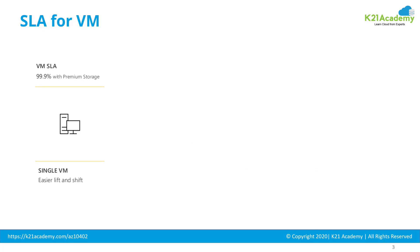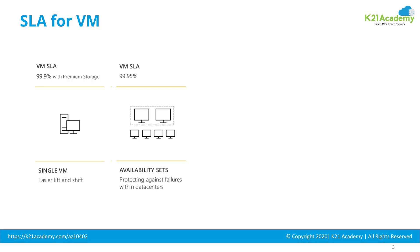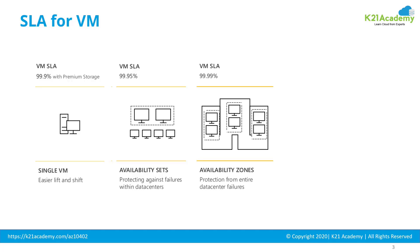From a service level agreement point of view for virtual machines: if you create a single virtual machine, you only get 99.9% uptime with premium storage. If you create two machines in the same availability set — meaning they are in the same data center but in different fault domains — then you get a 99.95% SLA. Or if you create two machines across two different availability zones, meaning different data centers, then you get a 99.99% service level agreement.